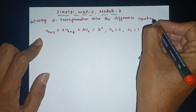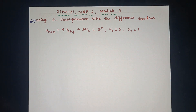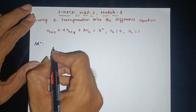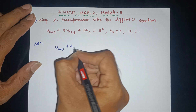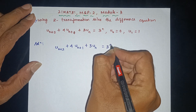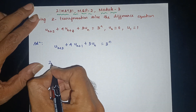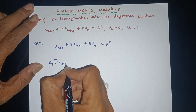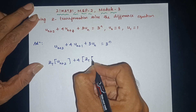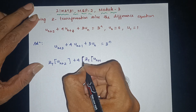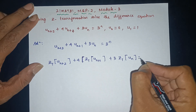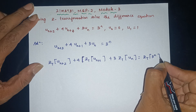Difference equation: u(n+2) + 4u(n+1) + 3u(n) = 3^n. We apply Z-transform: Z-transform of u(n+2) plus 4 times Z-transform of u(n+1) plus 3 times Z-transform of u(n) is equal to Z-transform of 3^n.